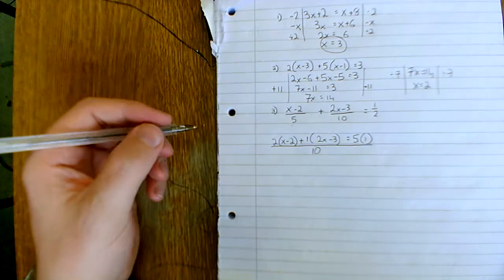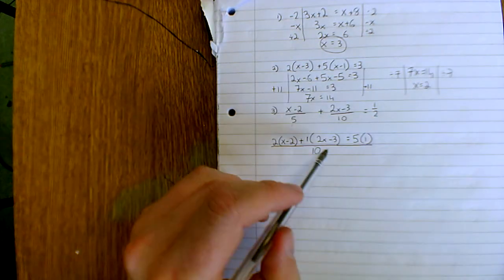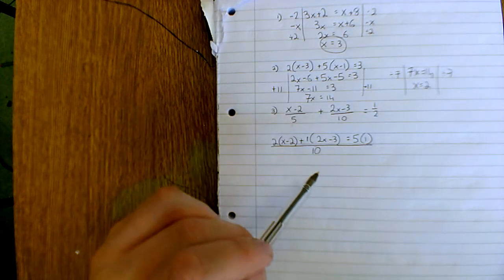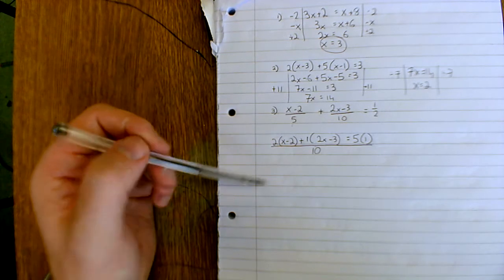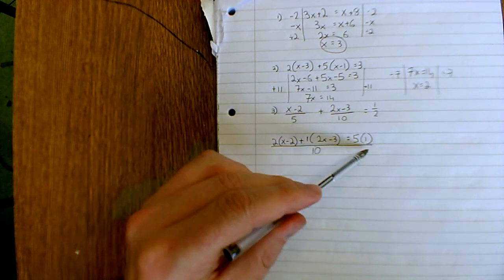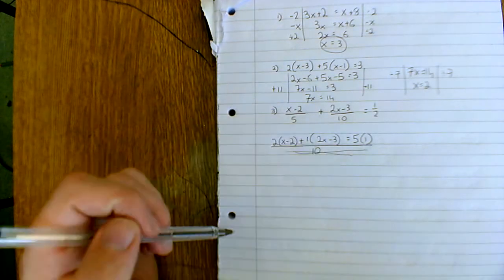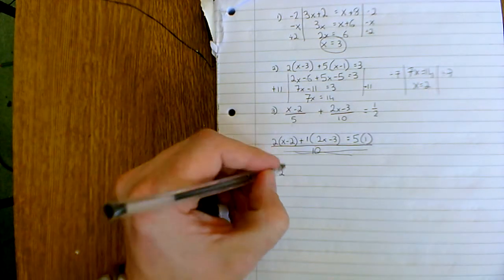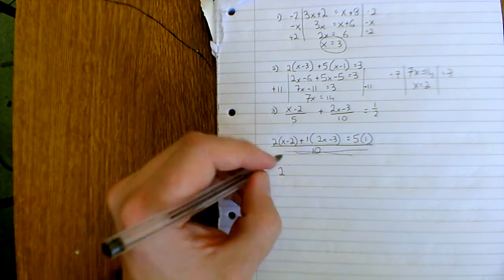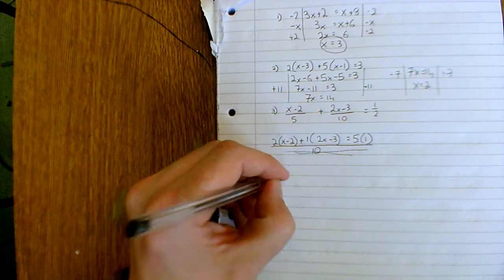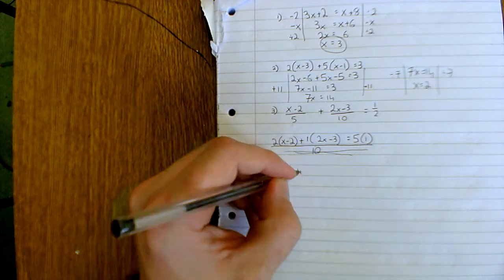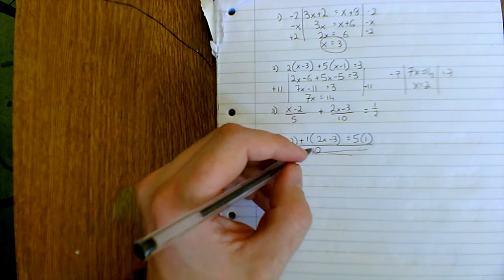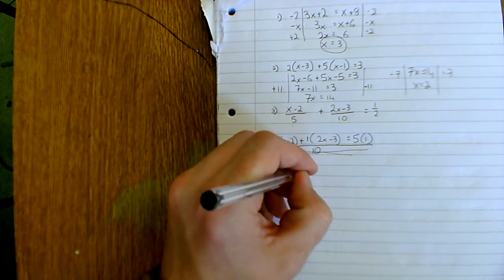Okay, now remember I said when we're solving, when I want to find out what x is, if it's all over the common denominator, I can forget about it. Forget about that common denominator. All I'm interested in is the top line, and I multiply it out. So 2 by x is 2x, 2 by minus 2 is minus 4, plus 1 by 2x is plus 2x, plus 1 by minus 3 is minus 3, and that equals 5.